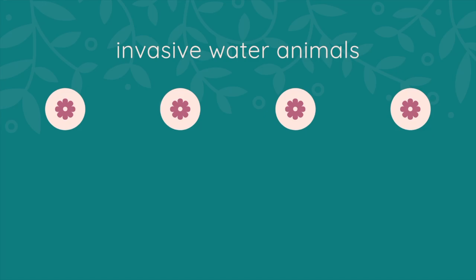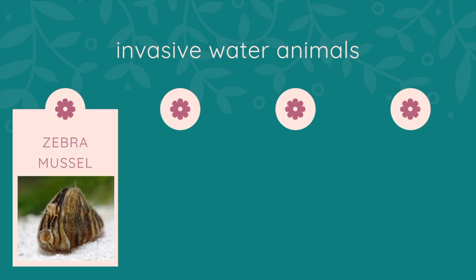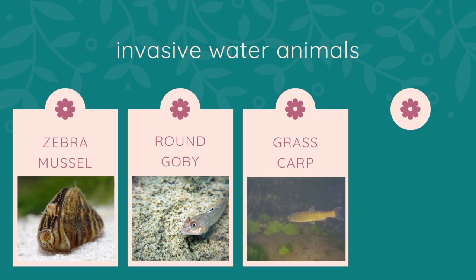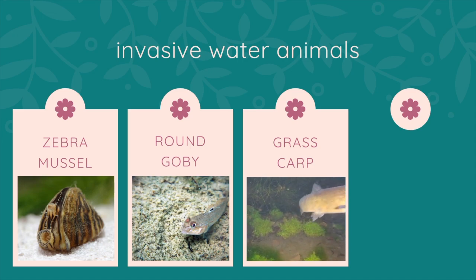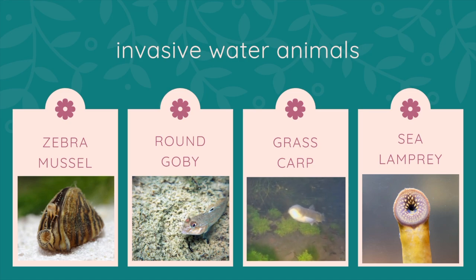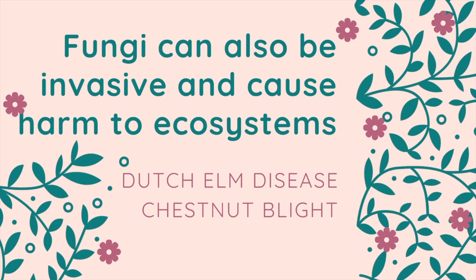And how about invasive water animals? Are you familiar with any of these? The zebra mussel, the round goby fish, a grass carp, and the sea lamprey — those were all brought to Ohio from other places and they're becoming invasive. Even fungi and tiny little microbes can become invasive and cause an ecosystem to be out of balance. Things like Dutch elm disease and chestnut blight are taking down trees.